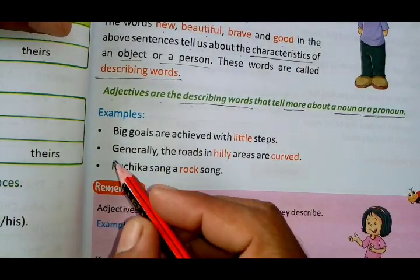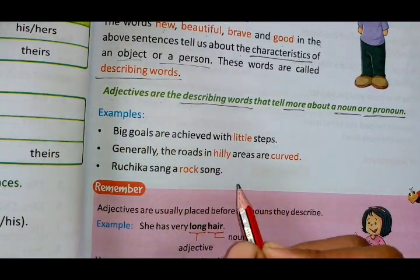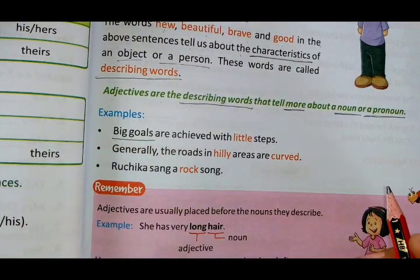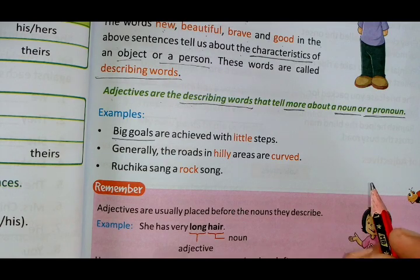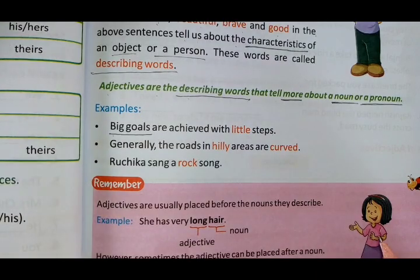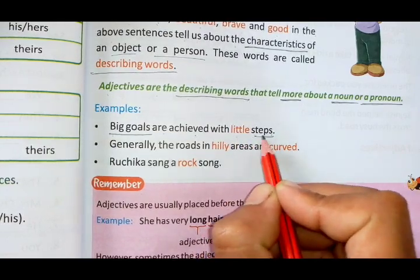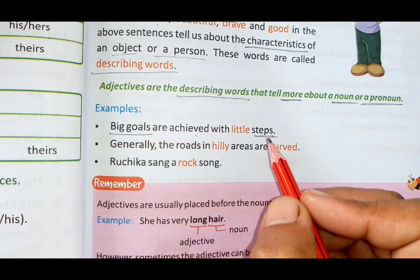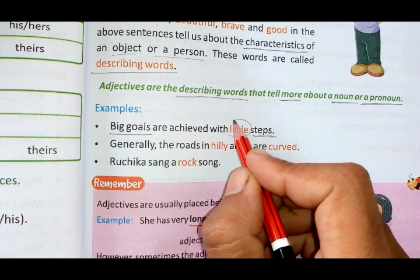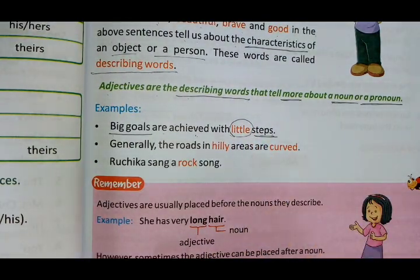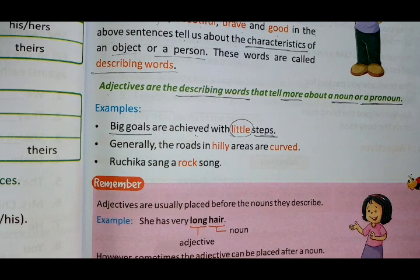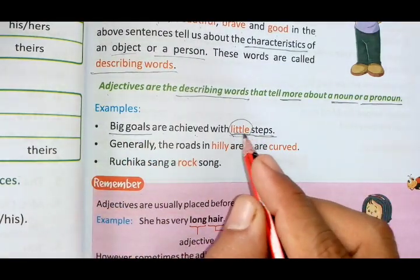For example: 'Big goals are achieved with little steps.' Goals means our aim, our wish, our target, our dreams. Big goals are achieved with little steps — chhote chhote steps se hi hum bada kaam kar sakti hai. Just as we say in Hindi, 'boond boond se sagar banta hai' — little steps lead to big goals. So here, 'little' is an adjective. Another example: 'The roads in hilly areas are curved.' Roads in hilly, mountainous areas are curved — tedhey medhey hain. Here 'hilly' and 'curved' are adjectives.